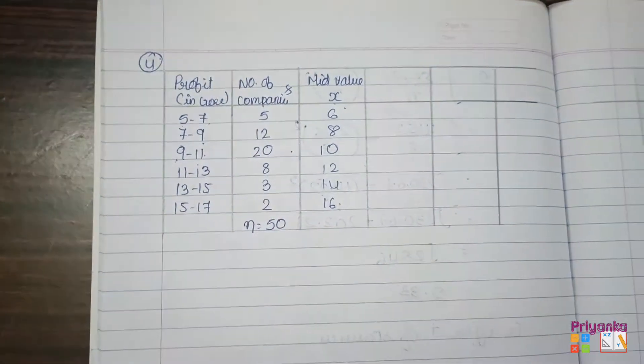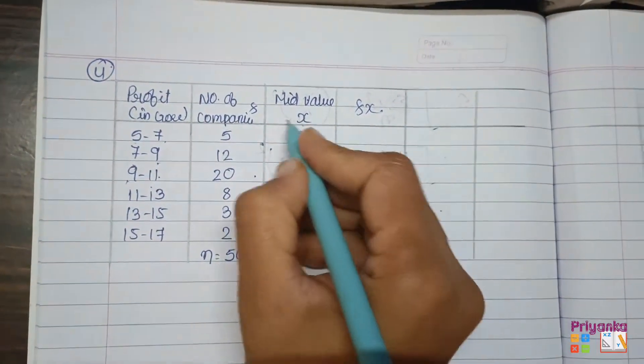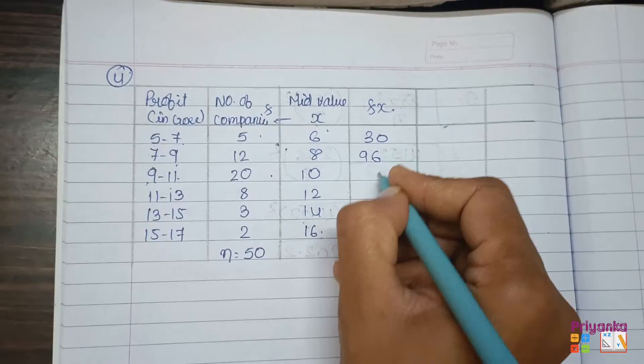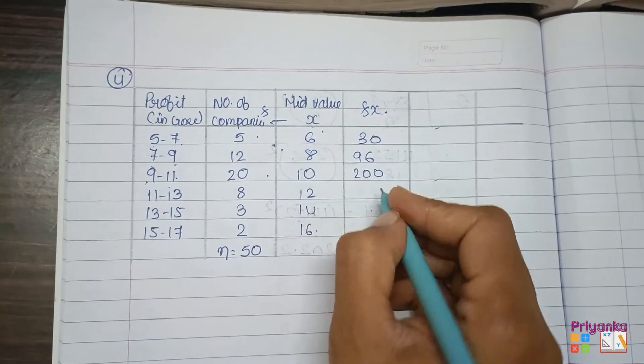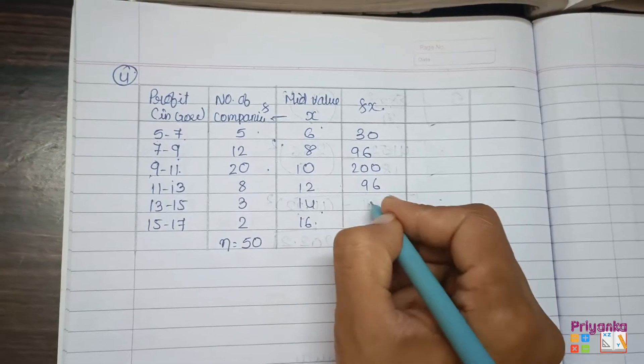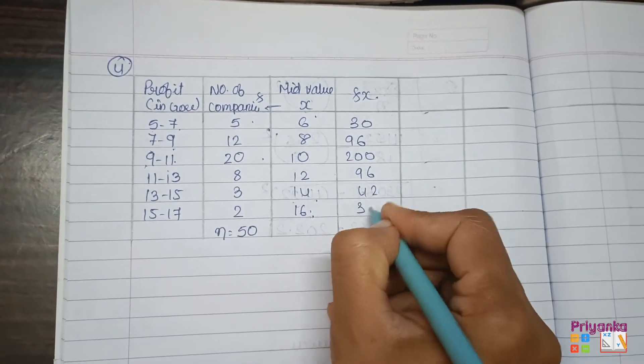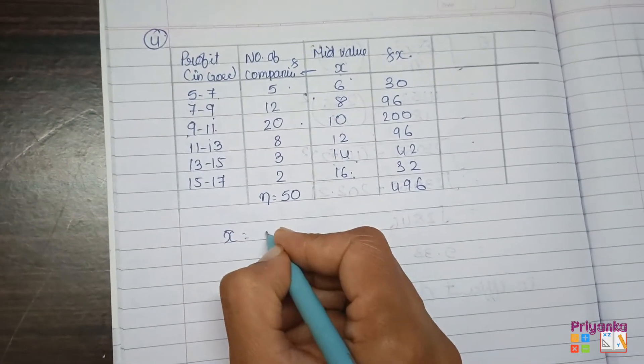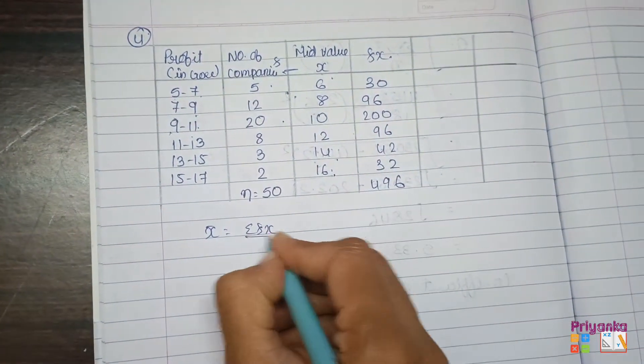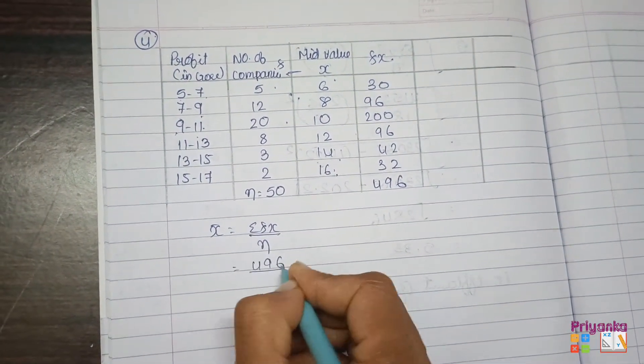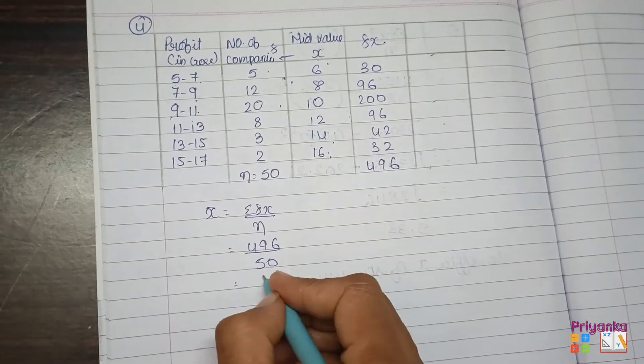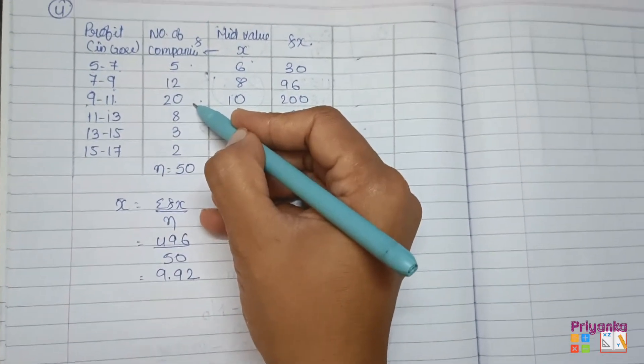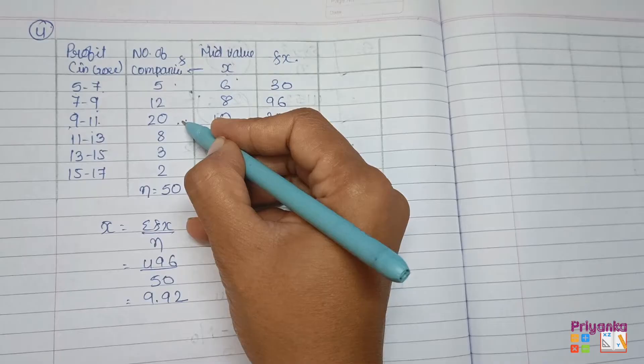Next, to find mean we need fx, the multiplication of frequency and x. 5×6=30, 12×8=96, 20×10=200, 8×12=96, 3×14=42, 2×16=32, giving total 496. Now we'll find the mean which is sigma fx divided by n: 496 divided by 50 equals 9.92.